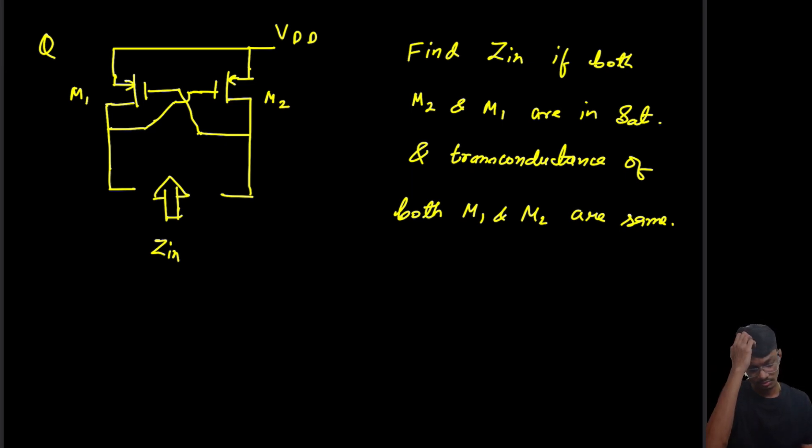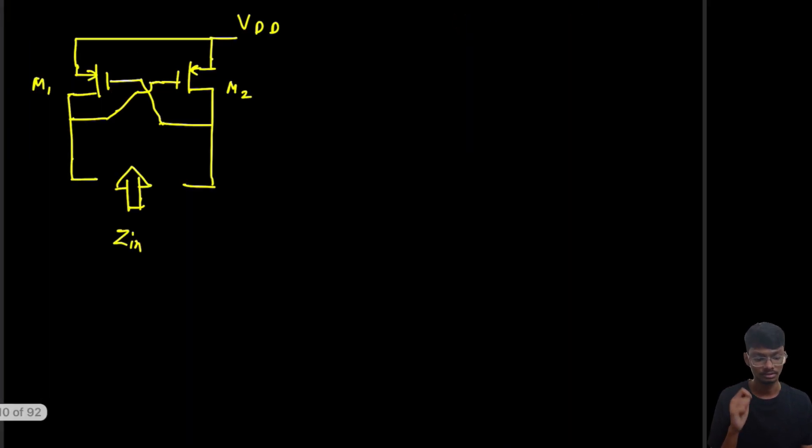How should we proceed in this problem? In these types of questions, what we should keep in mind is to take as few unknowns as possible. The number of unknowns should be kept at minimum. So how should we go along?